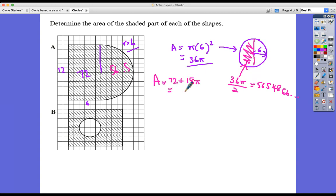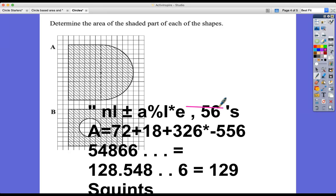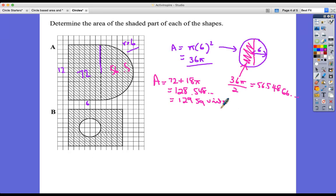The area is going to be 72 plus 18π, or 56.5. Just add on the 72 to that last answer and we get 128.548, which if we're going to round it to the nearest whole number or three significant figures, is 129 square units.